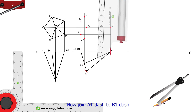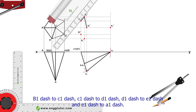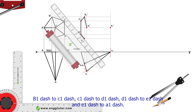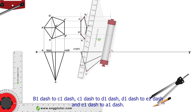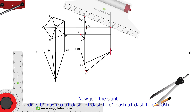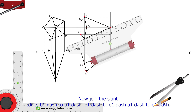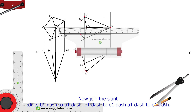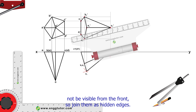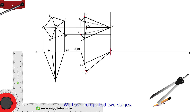Join A1' to B1', B1' to C1', C1' to D1', D1' to E1', and E1' to A1'. Now join the slant edges: B1' to O1', E1' to O1', and A1' to O1'. The two slant edges C1'–O1' and D1'–O1' will not be visible from the front, so join them as hidden edges. We have now completed two stages.